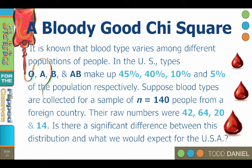I've got a good chi-square example to illustrate this chi-square goodness of fit test, where we assume no difference from the comparison population. It is known that blood type varies among different populations of people. In the United States, types O, A, B, and AB make up 45%, 40%, 10%, and 5% of the population respectively. Suppose blood types are collected for a sample of 140 people from a foreign country. The raw numbers were 42, 64, 20, and 14. Is there a significant difference between this distribution and what we would expect based on distributions in the USA?